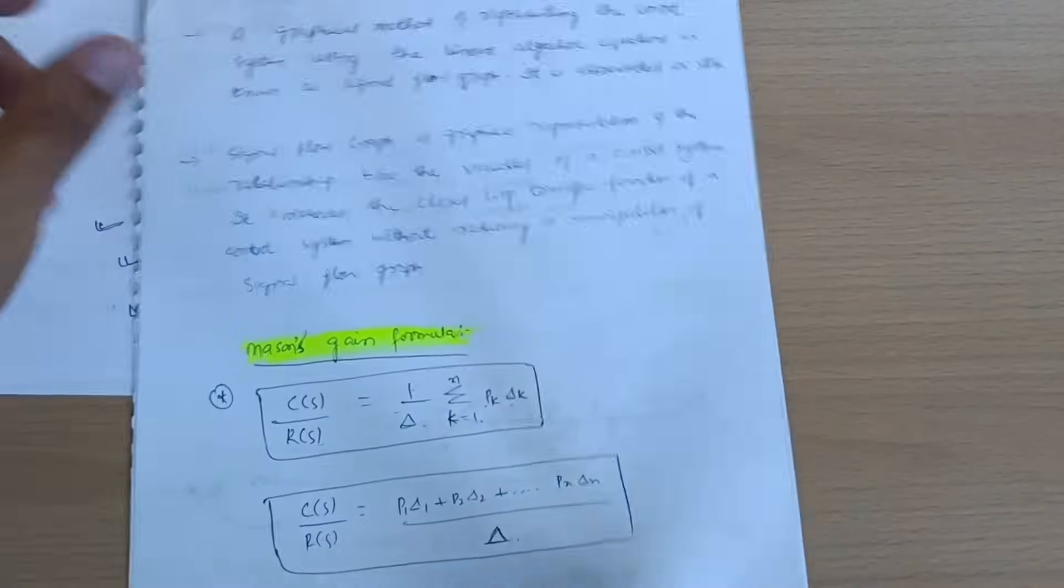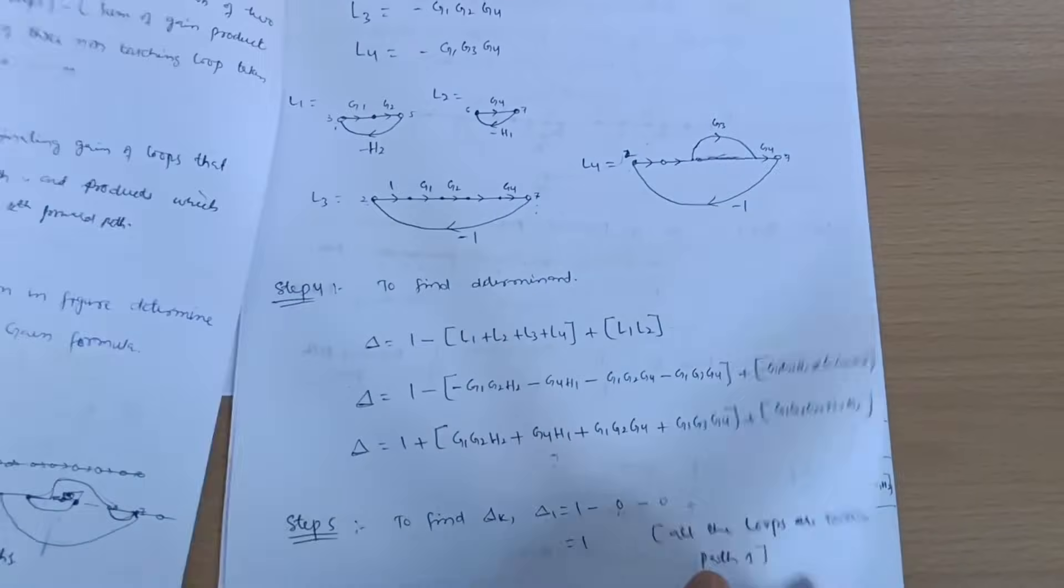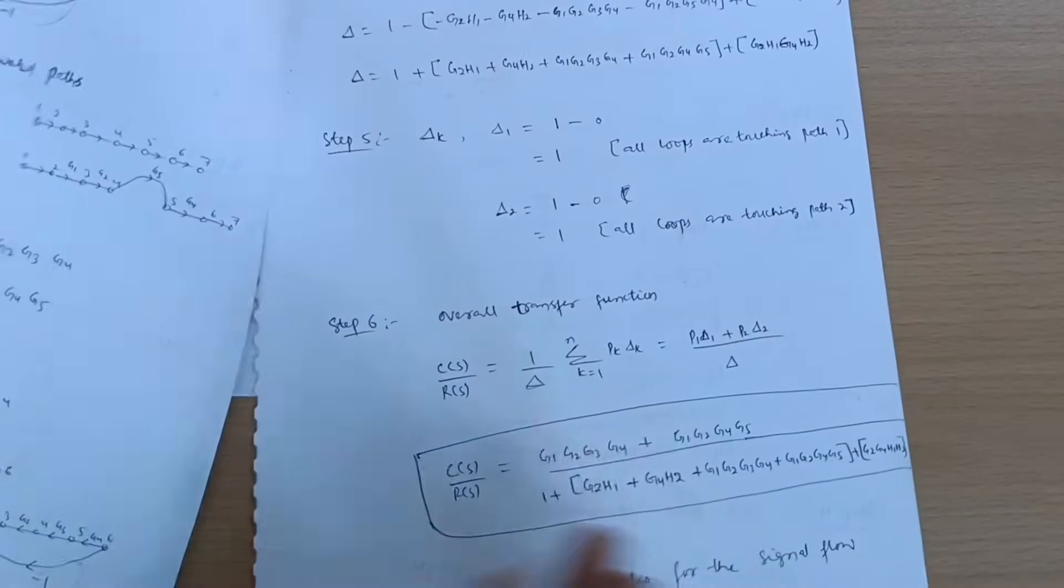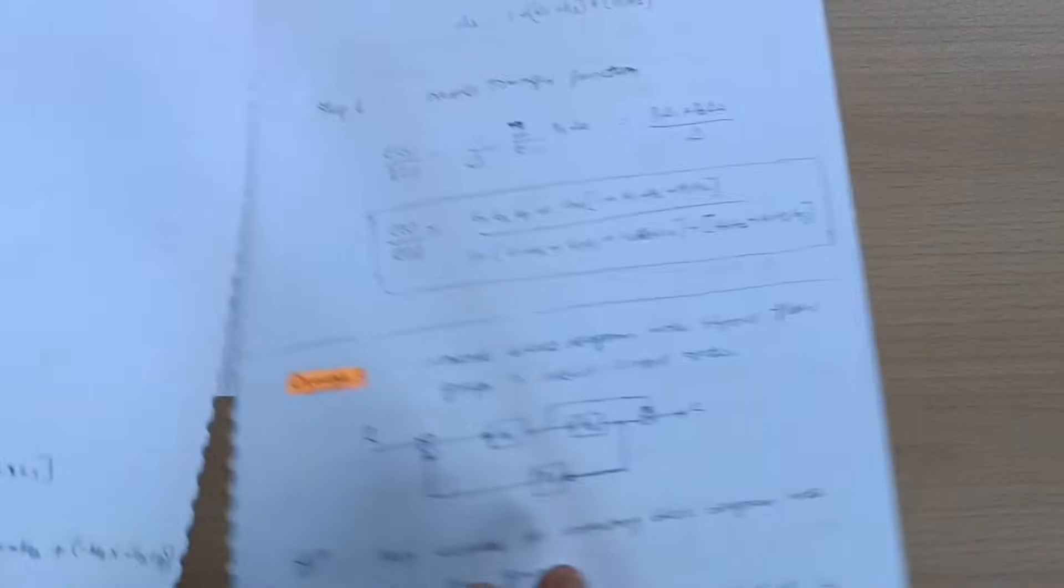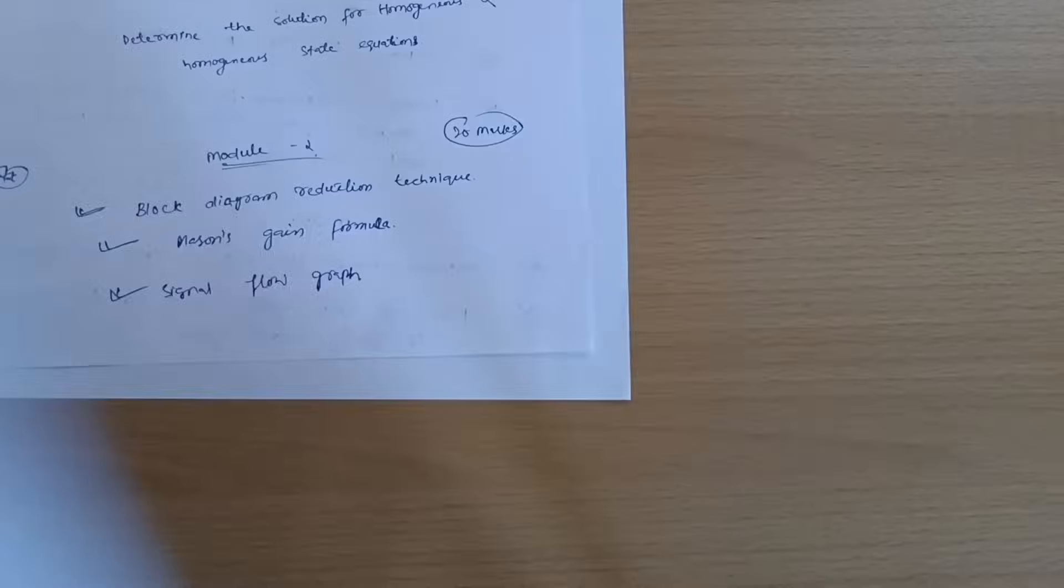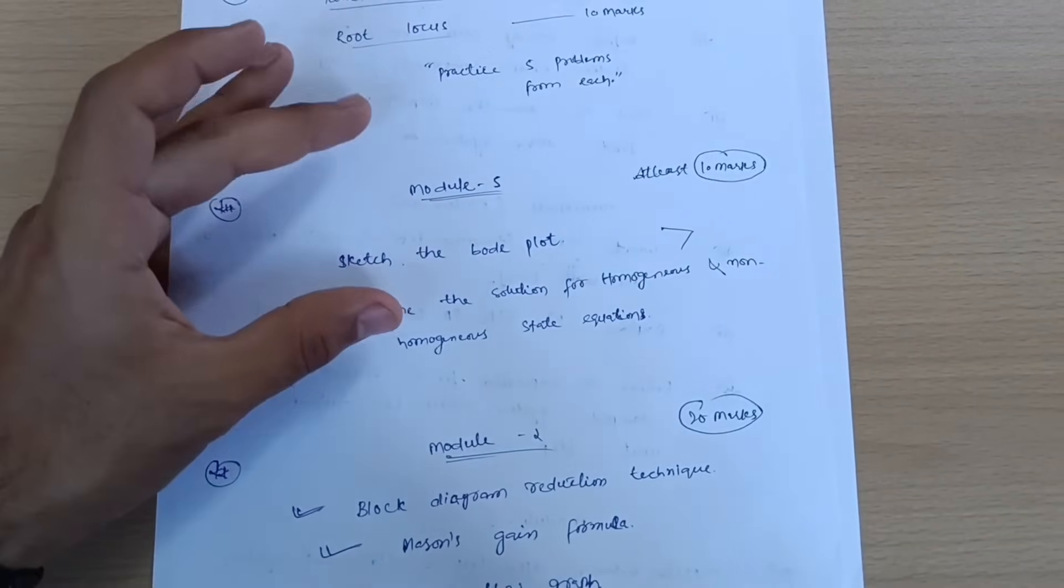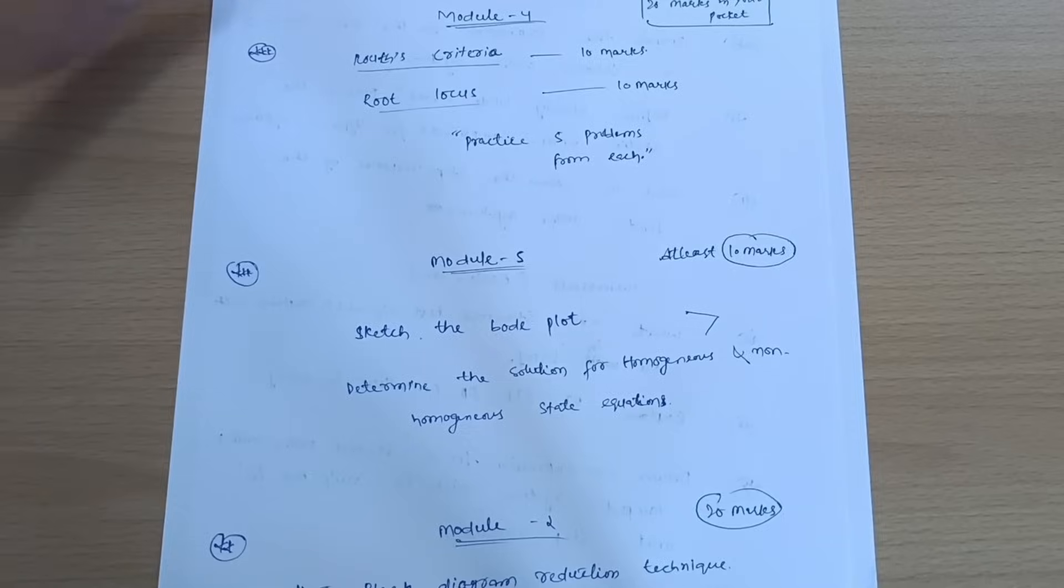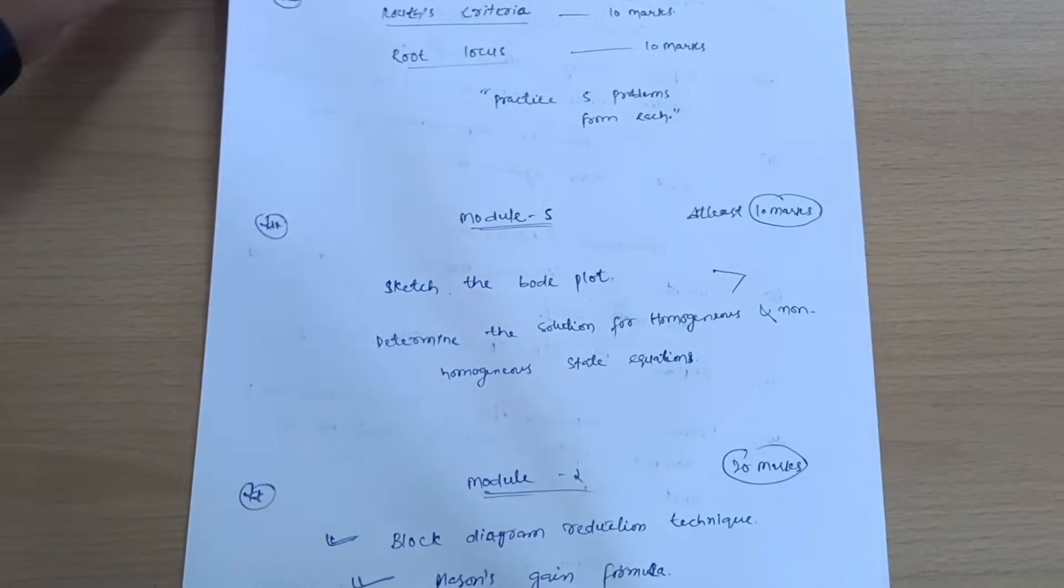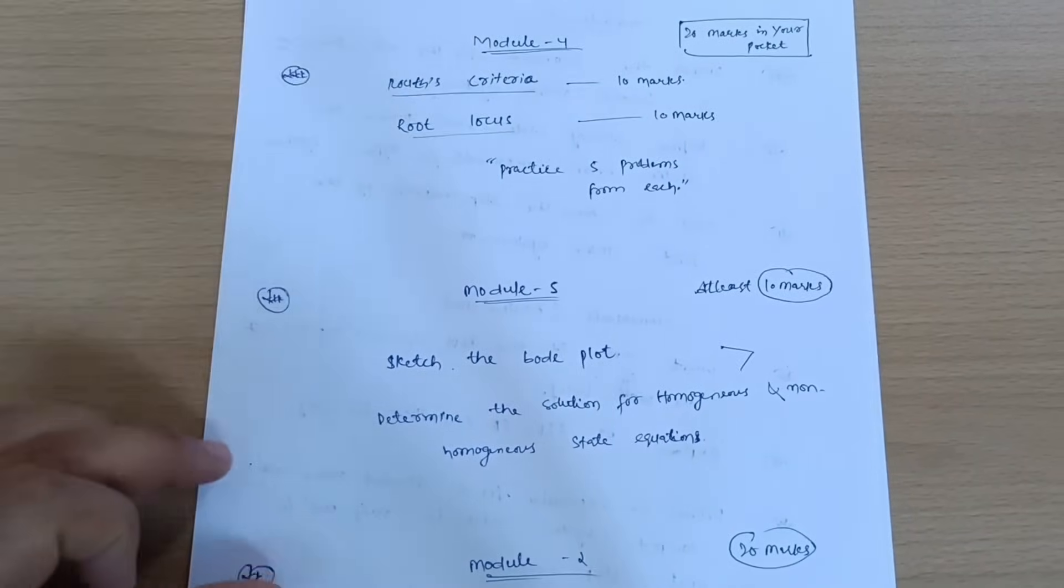At least you should try five numericals from Block diagram reduction and signal flow graph. See here the interface of the signal flow graph notes. This is your signal flow graph. You should surely practice five problems from both the topics, that is Block diagram reduction and signal flow graph. This is all about Module 2. These are the key modules. If you just go through them, I think you no need to go for the rest of the modules.